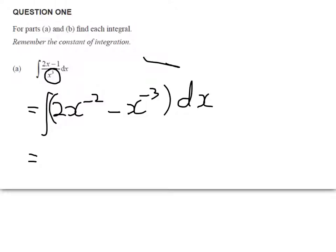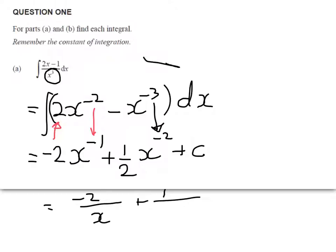So using my year 12 differentiation, we're going to be going up a power, so it's going to be something x to the negative 1, and it has to be negative 2x to the negative 1. And then on the next bit, it's going to be something x to the negative 2, and I want it to be minus, so it'll be plus 1 half x to the negative 2, plus c. And fine to leave it like that, or you could rewrite it like this: negative 2 over x plus 1 over 2x squared plus c.